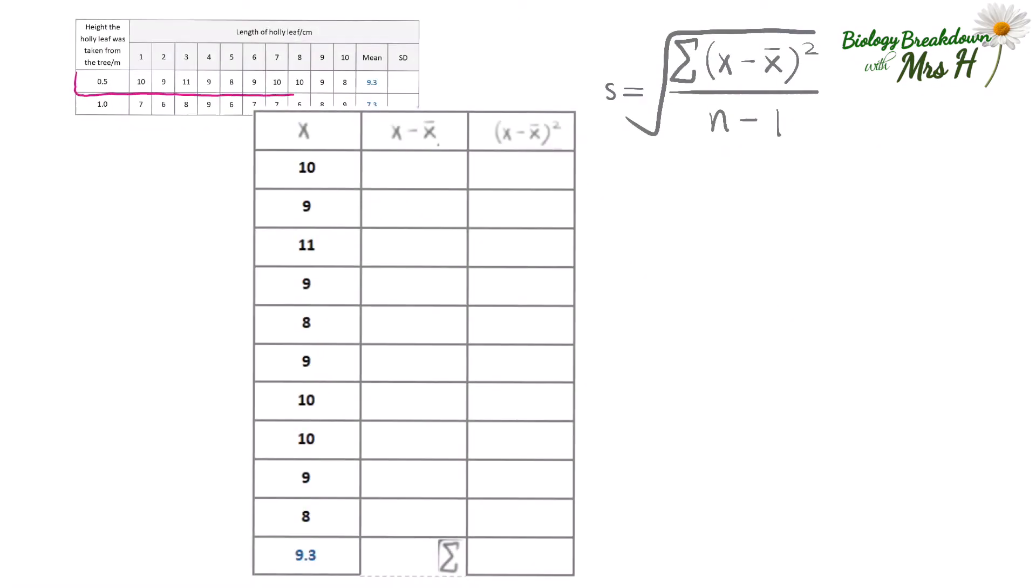First we will work out the standard deviation of the data collected at the height of 0.5 metres. We need to work out X minus the mean and then in the next column square that value. The mean length of the holly leaf at 0.5 metres was 9.3 so for the first row X is 10, the mean is 9.3, so we do 10 minus 9.3 which is 0.7. Then just follow that down and complete the rest of the column.